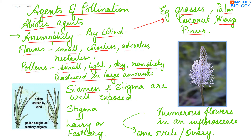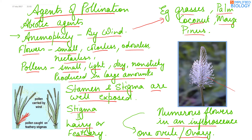The stamens and stigma are well exposed, meaning they protrude out of the flower. The stigma is hairy or feathery so that any pollens in the air get entangled in it. Numerous flowers can be seen in an inflorescence — all these small flowers grow together in an inflorescence. In these flowers, one ovule develops per ovary.